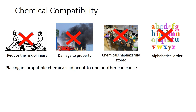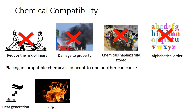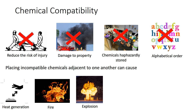Heat generation — for example, adding corrosives to water. Fire — for example, mixing corrosives and flammables. Explosion — for example, mixing corrosive acid and corrosive alkali. Toxic gas or vapor production — for example, storing corrosives in plastic.